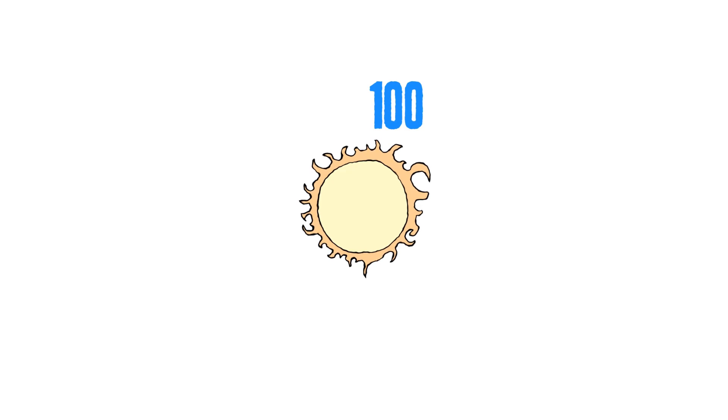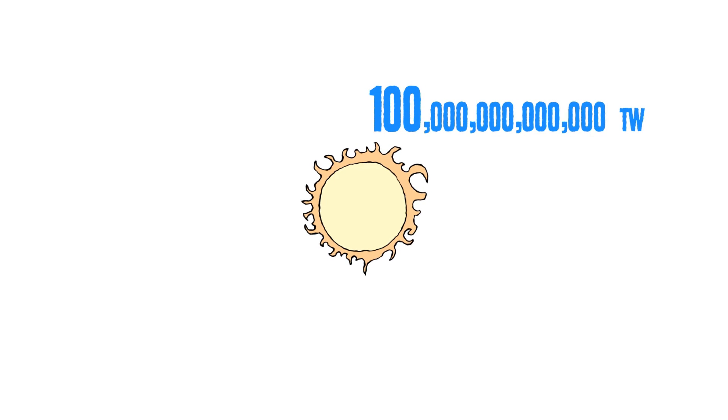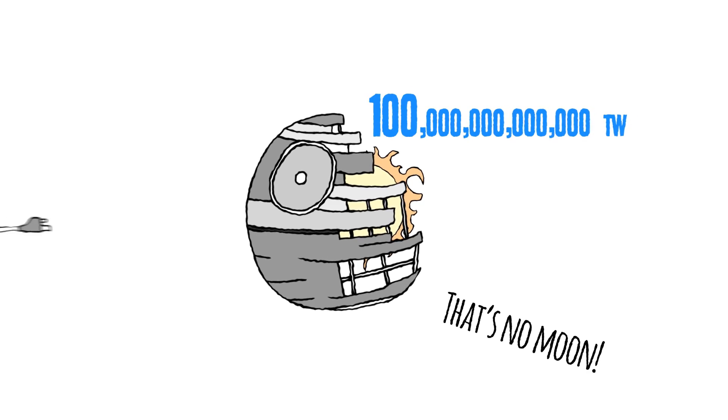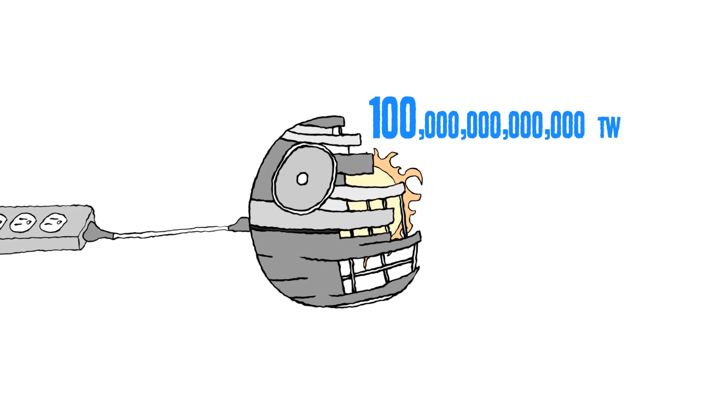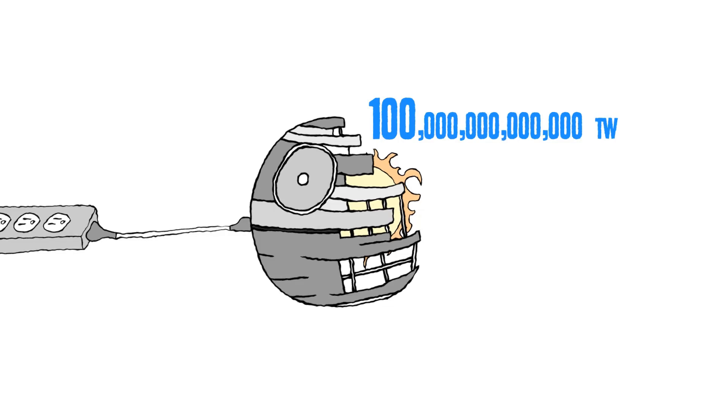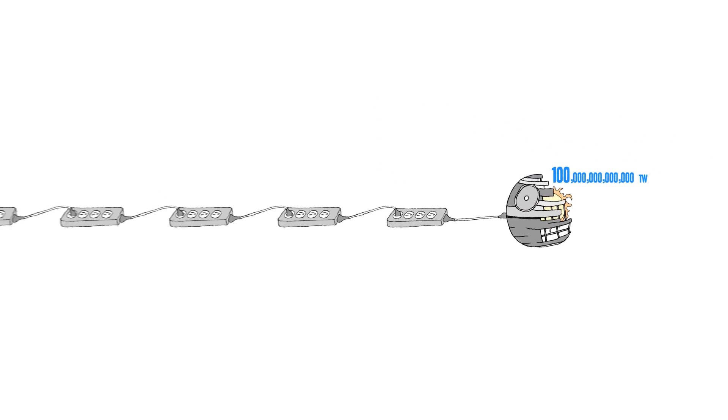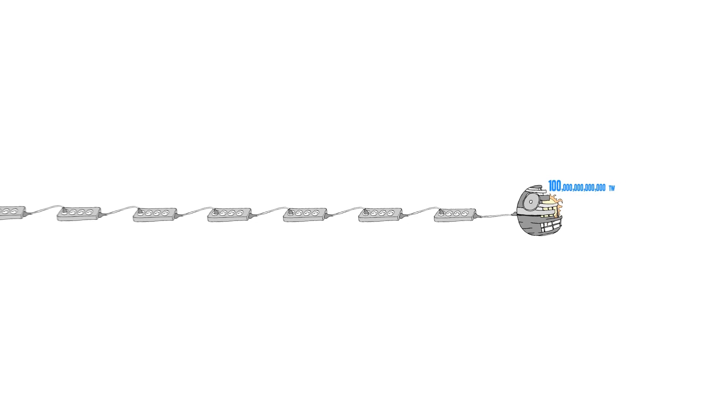Well, the sun is basically a 100 trillion terawatt hydrogen powered fusion reactor. And if we could somehow surround it with solar panels and capture all of its energy at even just 10% efficiency, we could power a civilization a trillion times the size of our own. And yeah, that might be an interesting long term goal, but it doesn't really help our current situation, does it?